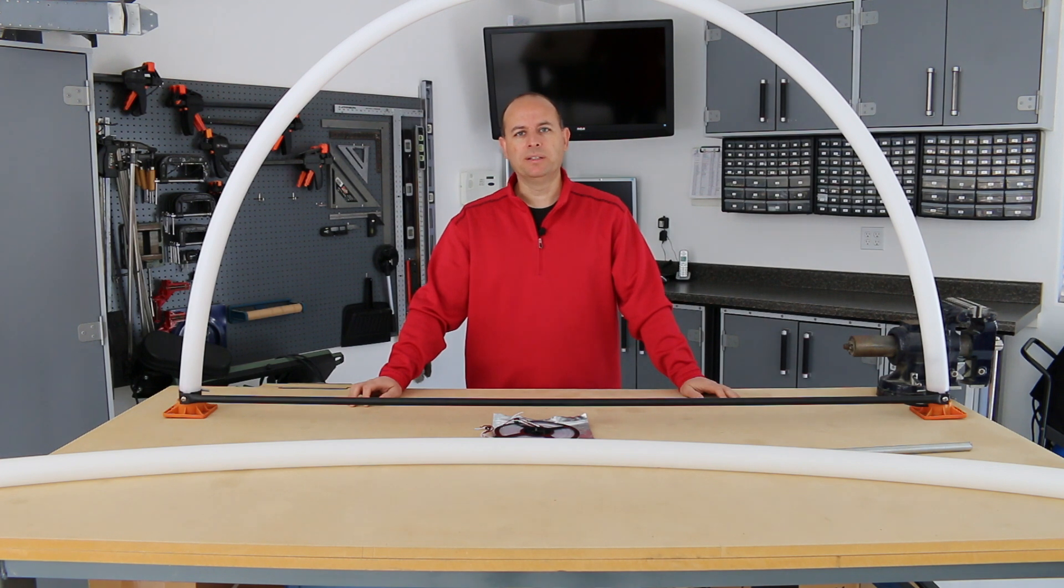Most of the parts necessary to build the leaping light arch are available at Home Depot or Lowe's. The exception is the tube and the lights that go inside the tube.